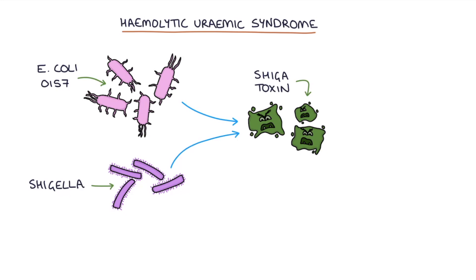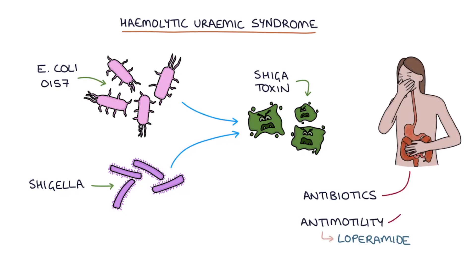And the use of antibiotics and anti-motility medications like loperamide to treat gastroenteritis caused by these particular pathogens increases the risk of developing hemolytic uremic syndrome. So this is the main reason when somebody has gastroenteritis that we wouldn't routinely use antibiotics or loperamide to treat the condition.